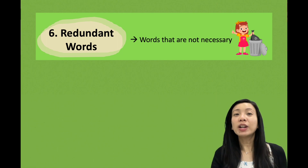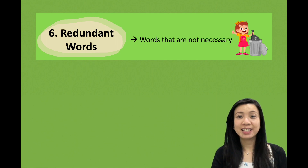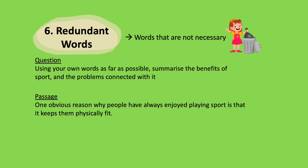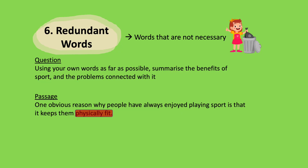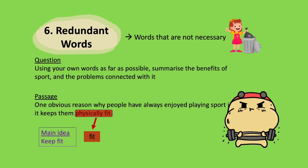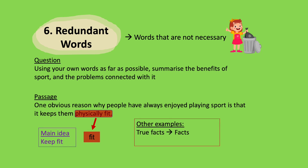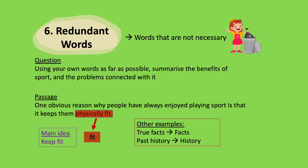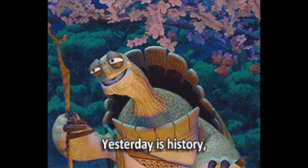The final thing we do not need in our summary paragraph is redundant words — words that are simply not necessary. For example: 'One obvious reason why people have always enjoyed playing sport is that it keeps them physically fit.' The keyword is 'physically fit,' so the main idea is that sport keeps us fit. I don't actually need the word 'physically' — I can cut it down to just 'fit.' Other examples of redundant words include 'true facts' (facts are already true, so just say 'facts') and 'past history' (history is already in the past, so just say 'history').